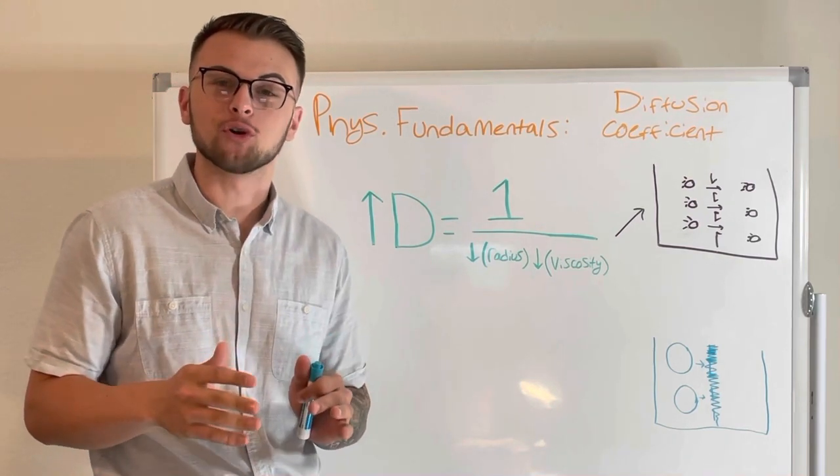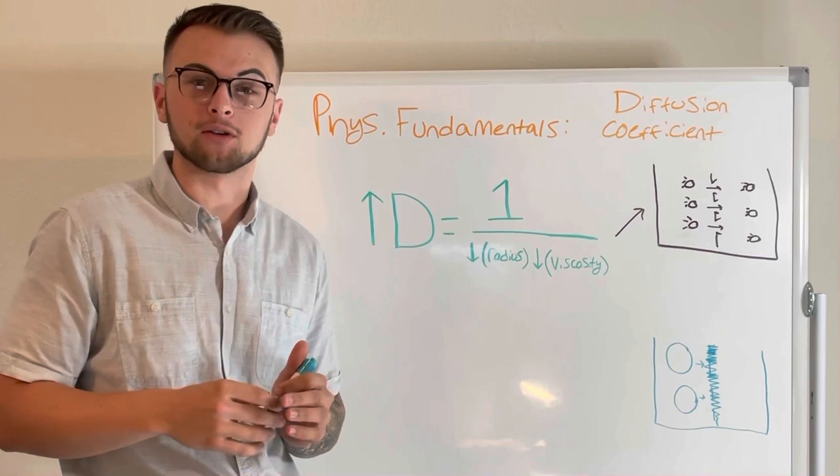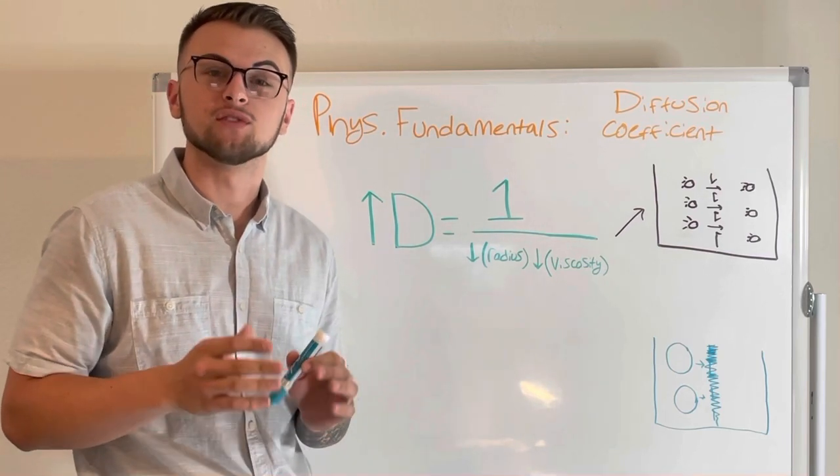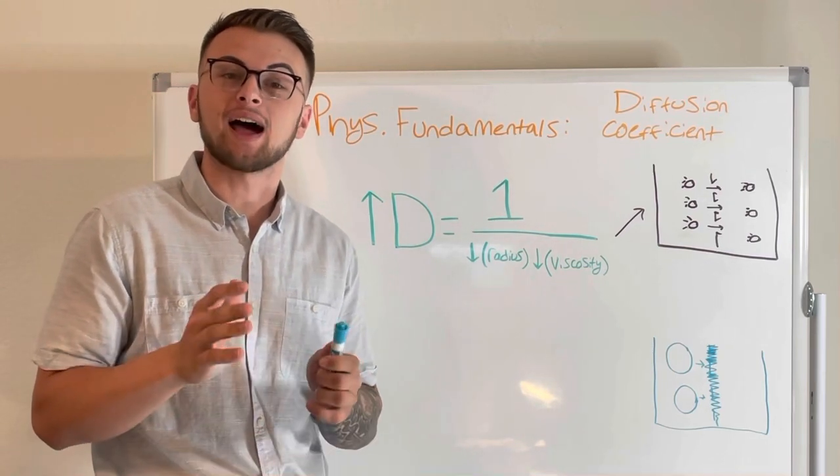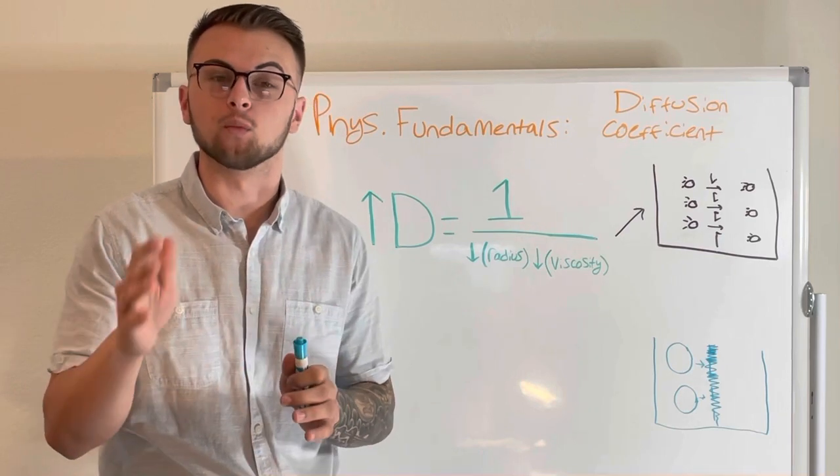The diffusion coefficient can be understood if you can understand bumper cars. This is because the diffusion coefficient tells us how easily a substance can move from one area to another.